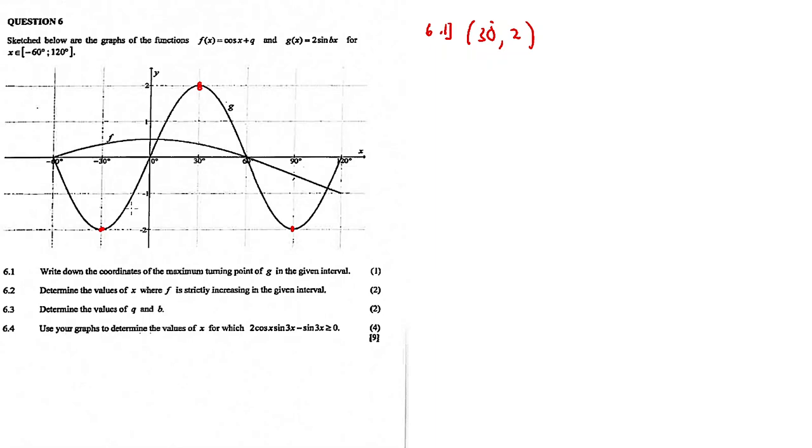Just for curiosity's sake, what about this one? This is a minimum. The coordinates for this turning point are about minus 30 degrees, minus 2. This one is about 90 degrees, minus 2. Now, 6.2.